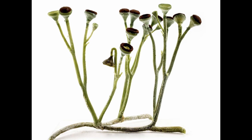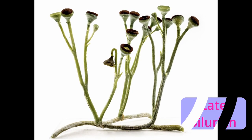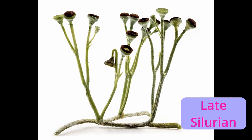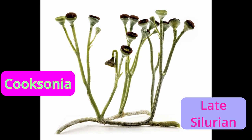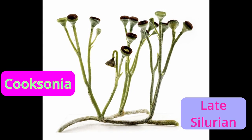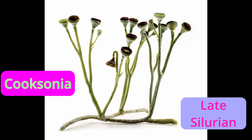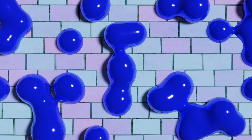As for fossils of the plants themselves, those start appearing in the late Silurian, the most famous of which is Cooksonia, a semi-vascular plant dating to the Wenlock epoch, which reproduced with spores from its sporangia. The coming period of the Devonian would see a far greater diversification of plant life.